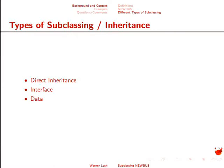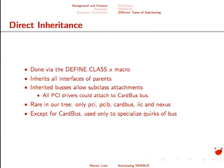So, what are the different ways that you can subclass in Newbus? It turns out there are basically three. Two are available for drivers and buses, and the third one is really only available for buses, and only to a limited extent. The first is direct inheritance. This is something we don't do much in the tree right now, except for various classes of PCI. In this, you say you are a new type of foo — I'm a bar that's a type of foo, using the DEFINE_CLASS macro. One of the nice things about Newbus is that you can have single or multiple inheritance. I think we define up to five parents, and it would be relatively easy to have more.